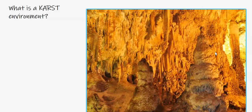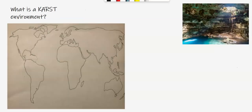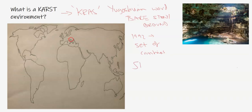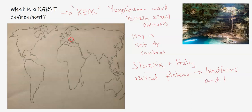These caves are wonderful and are basically the most common karst environment feature. So first let's define the word karst. Karst comes from the word 'krass,' which is a Yugoslavian word that means bare, stony ground. From that we can get an image of what this looks like. Yugoslavia post-1992 became a set of independent countries across that region.